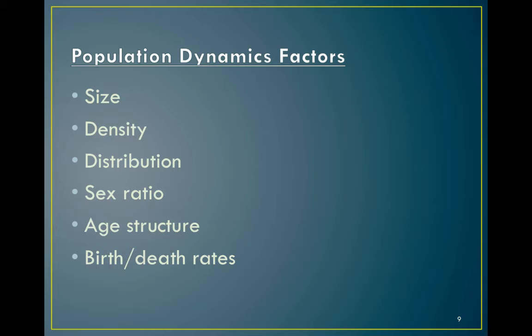What is a population? A population is individuals of the same species inhabiting a particular area — essentially a subset of a species. What are the six population attributes that help ecologists predict future dynamics of a population? They are: population size, population density, population distribution, sex ratio, age structure, and birth/death rates.